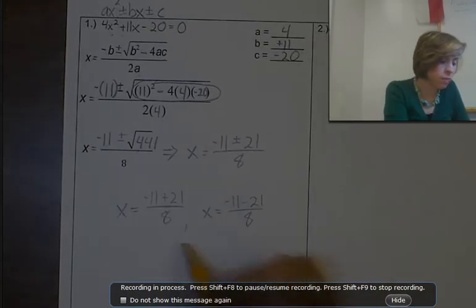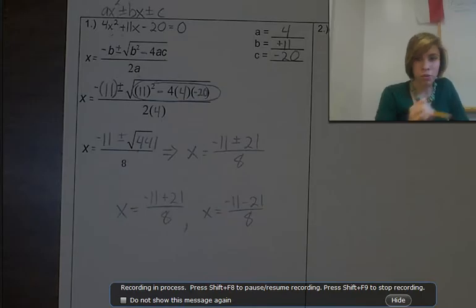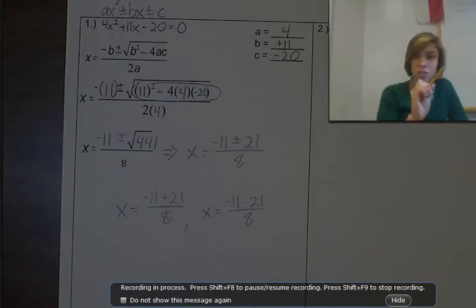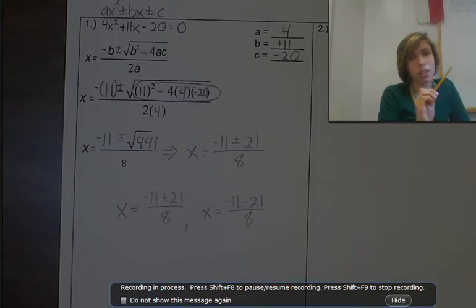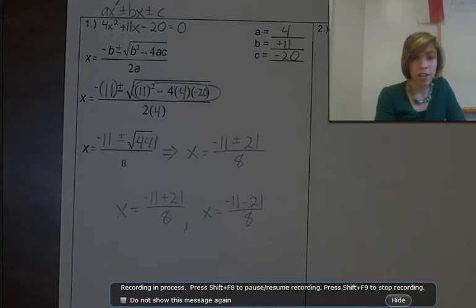Remember, when we're talking about quadratics, we're talking about a U-shaped graph that usually — not always — has two solutions: two places where it crosses the x-axis. And that's what we're solving for right now.